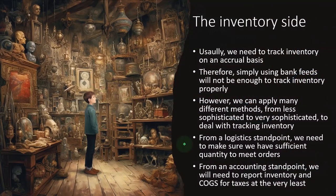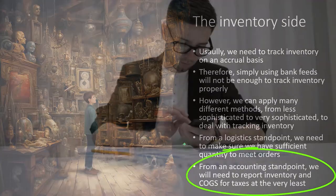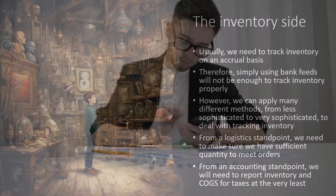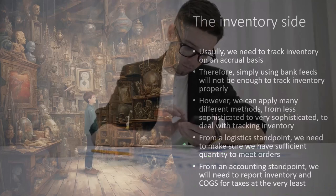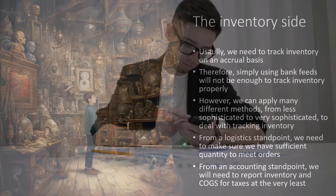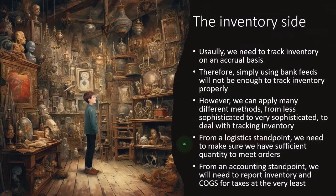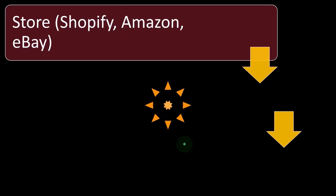Otherwise you're flying blind from an accounting standpoint. We will need to report inventory and cost of goods sold for taxes at the very least. Even if you're a small business, you could try a simple method, but you're going to at least need to report ending inventory and cost of goods sold on a yearly basis for tax preparation.